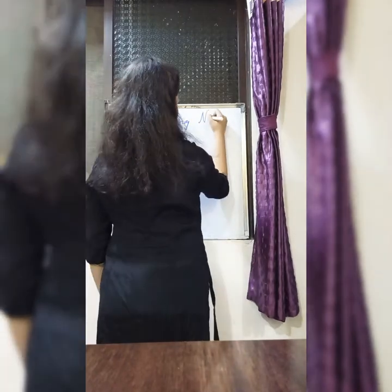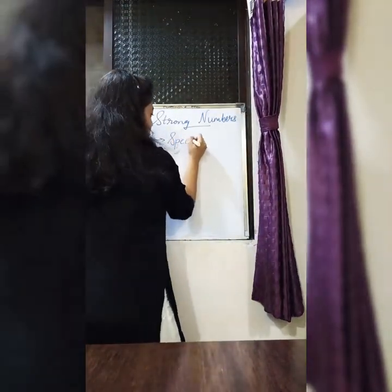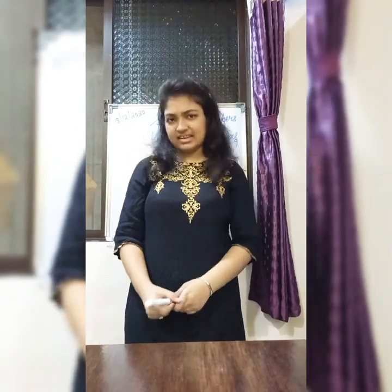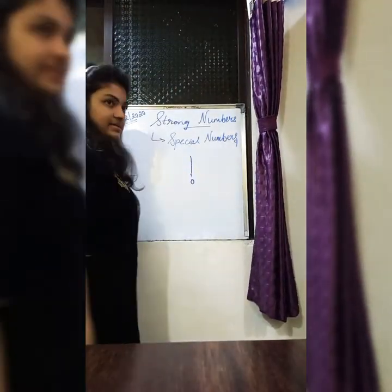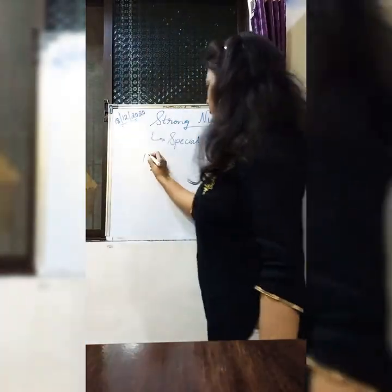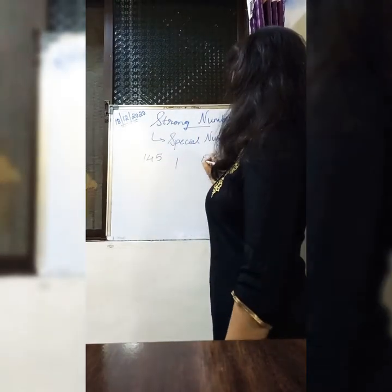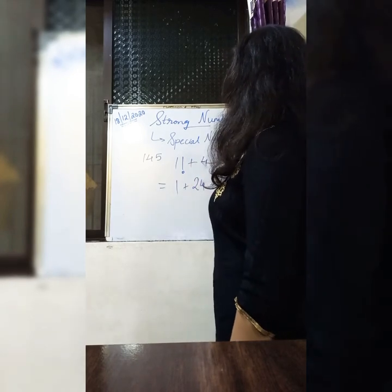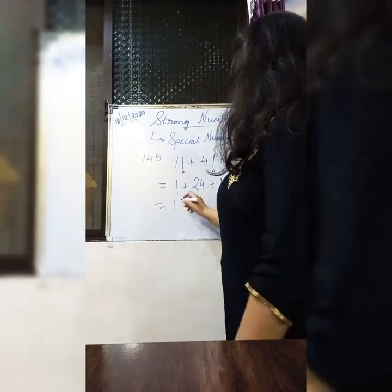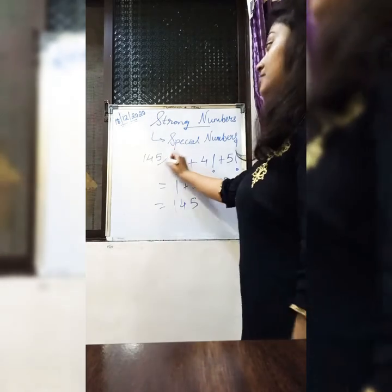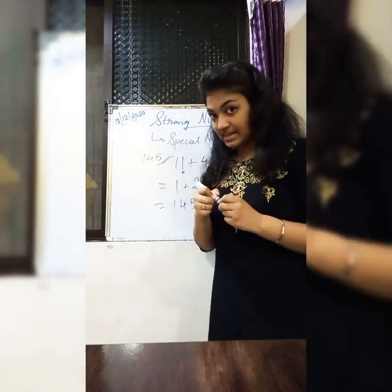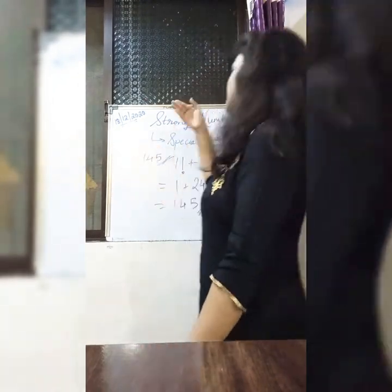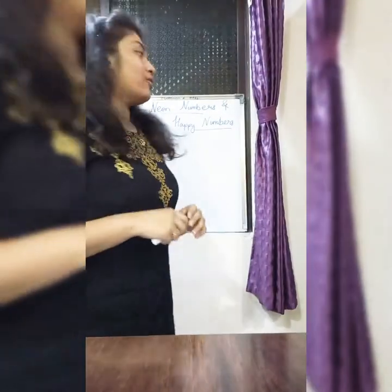Strong numbers are also referred to as special numbers. Are strong numbers really strong and special? They have a relation with factorials. Let's consider the number 145. Let's separate the digits: 1, 4, and 5. Let's take the factorial of each digit and add them up. It turns out to be 1 factorial plus 4 factorial, which is 24, plus 5 factorial, which is 120. When we add these numbers, we get 145 — again a match with the given number. So strong numbers or special numbers mean that if the sum of the factorials of the digits is equal to the given number, it is termed a strong number or special number.